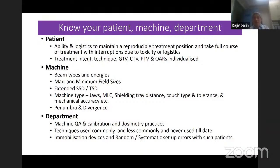Couch sag is not so important in 2D and simple 3D CRT, but in complex treatments it is very important. What is the mechanical accuracy? Some machines have much tighter accuracy. What is the penumbra and divergence for different energies and beams on your machine? You should have the beam profile data for that particular machine.